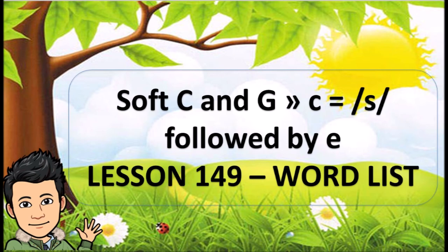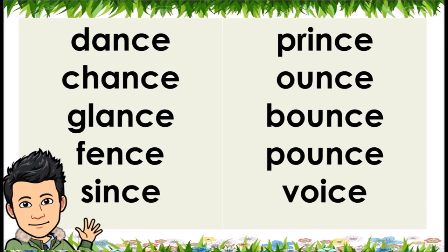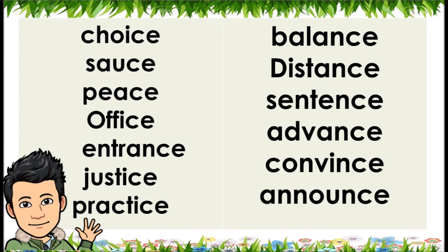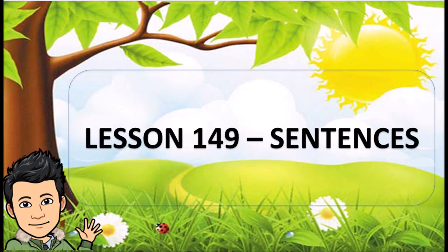Lesson 149, Word List: Soft C and G, C equals /S/ followed by E. Dance, Chance, Glance, Fence, Since, Prince, Bounce, Pounce, Voice, Choice, Sauce, Peace, Office, Justice, Practice, Balance, Distance, Sentence, Advance, Convince, Announce.